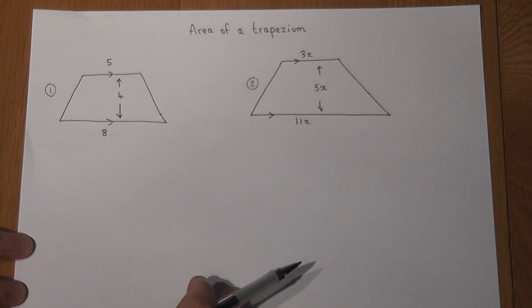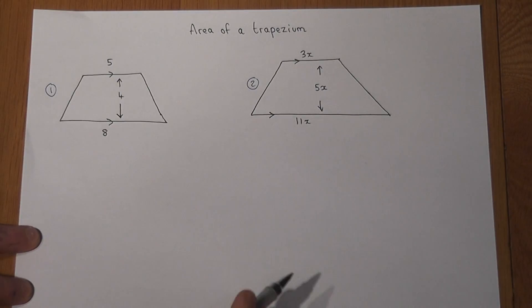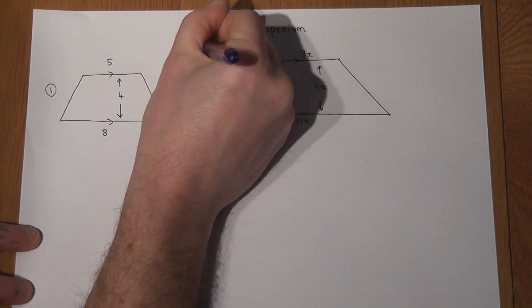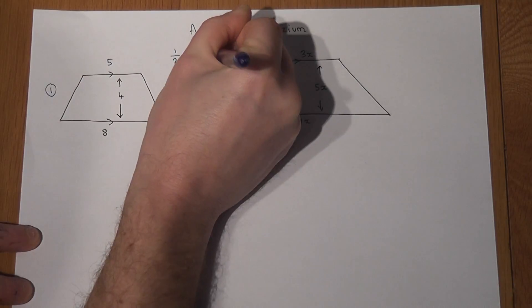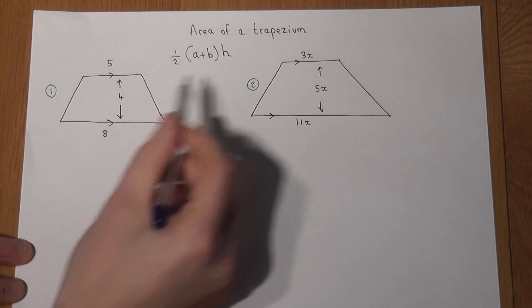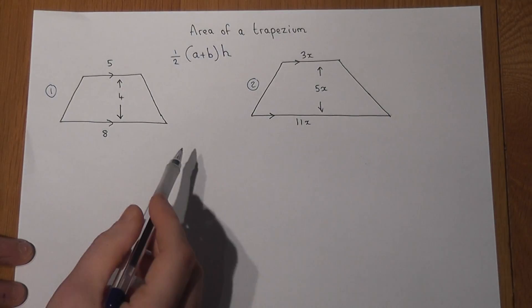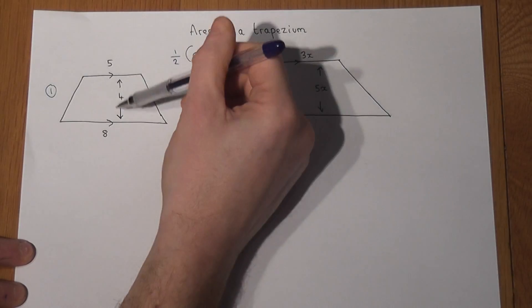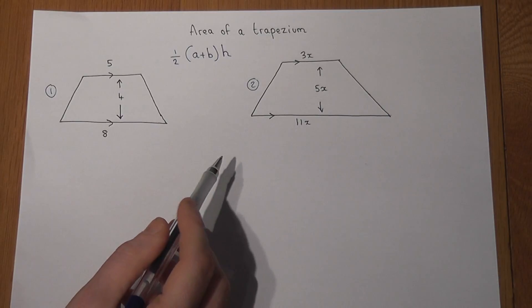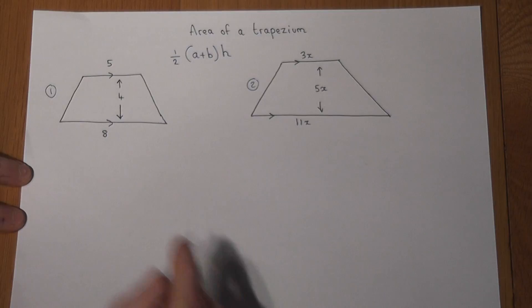The key formula to learn to make these questions simple is as follows: one half times (a plus b) times h. A and b are the two parallel sides in any order, and h is the height or the distance between the two parallel sides.